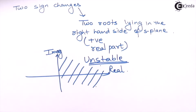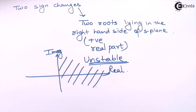In this problem we applied the method that whenever you obtain a row in the Routh array whose first element is zero but the row has at least one non-zero element, you substitute s = 1/z to obtain a new characteristic equation, build the new Routh array, and solve for stability. I hope this problem is clear to you. Thank you.